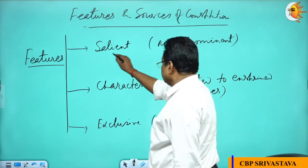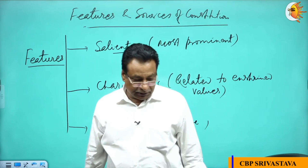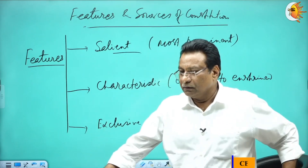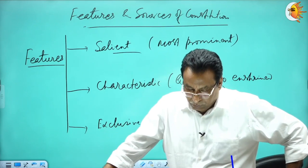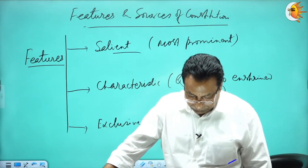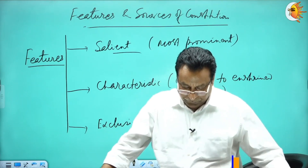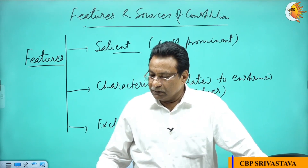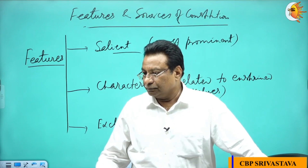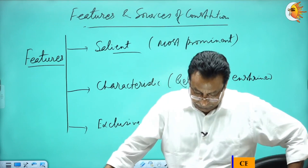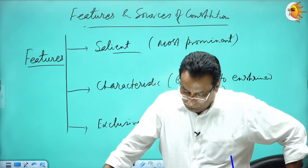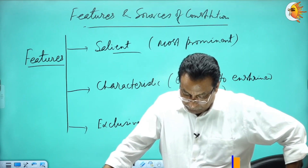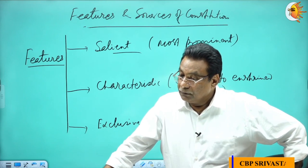You can note down one by one. Salient features: first is written and codified document. Second is unitary federal structure. Third is rule of law.